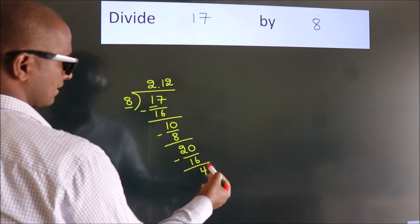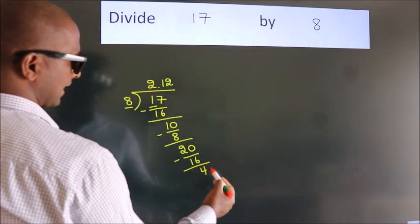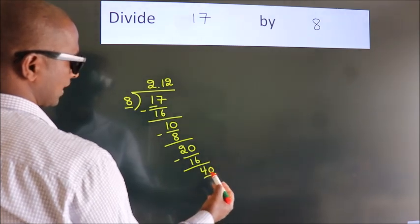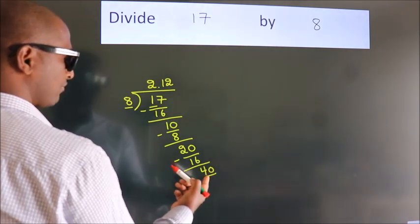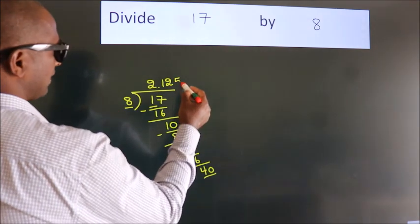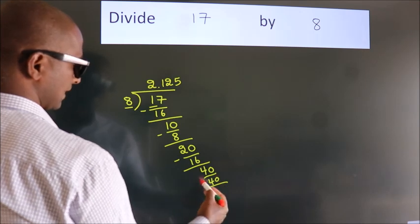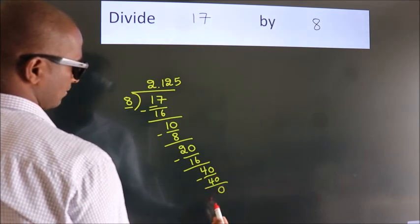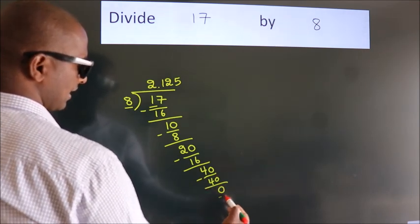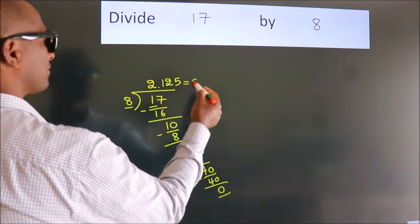After this, we already have the decimal, so directly take 0. So 40. When do we get 40? In the 8 table, 8 fives, 40. Now we subtract. We get 0. Here we got remainder 0. So this is our quotient.